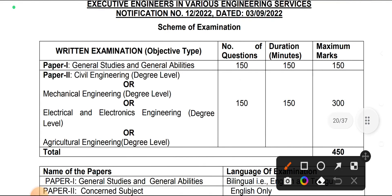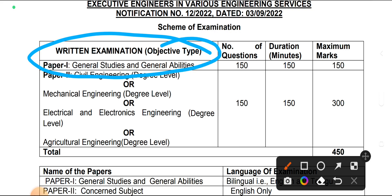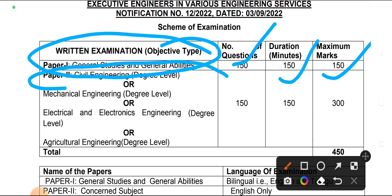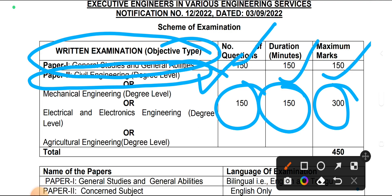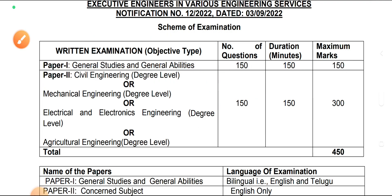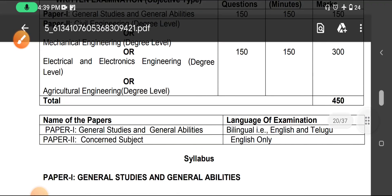Here is the exam pattern. Paper 1 is general studies and general abilities — 150 questions, 150 minutes, 150 marks. Paper 2 is your branch subject, civil engineering — 150 technical questions, 150 minutes duration, 300 marks. Total marks for Paper 1 and Paper 2 combined is 450 marks.